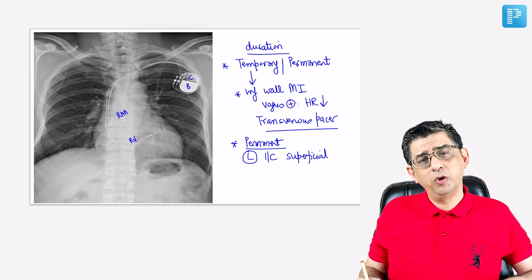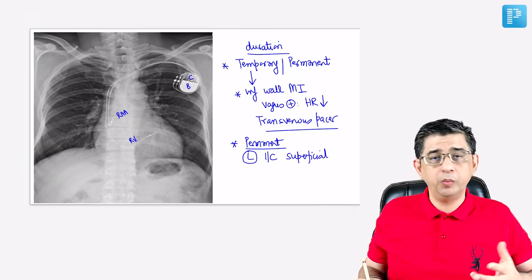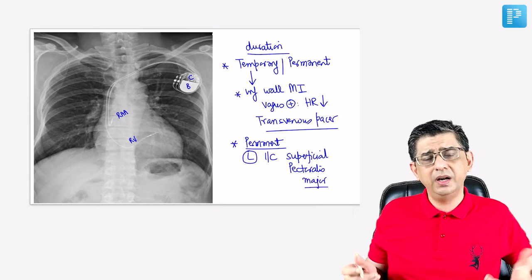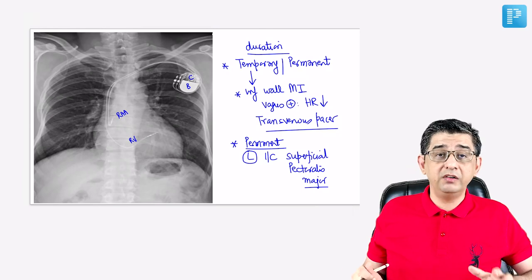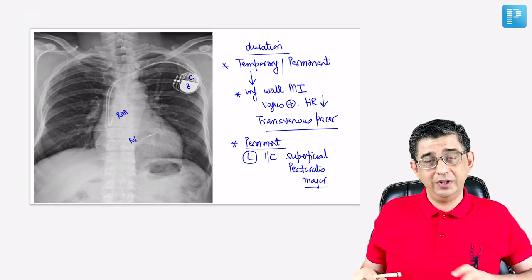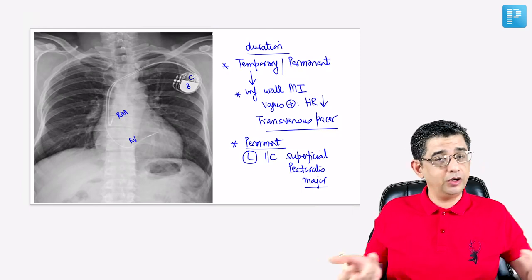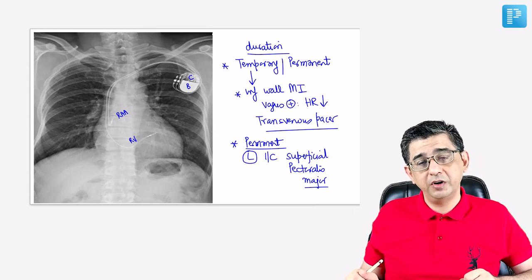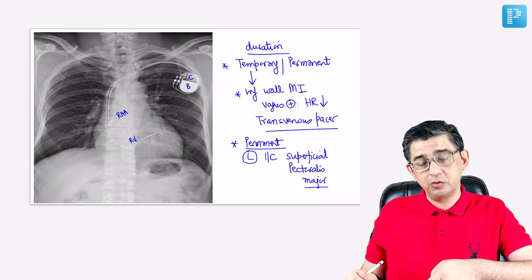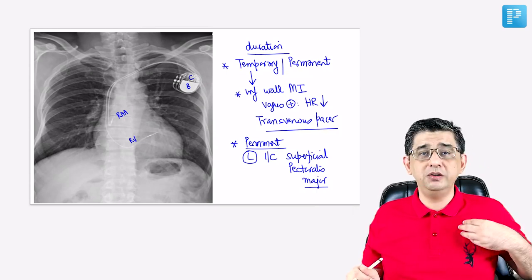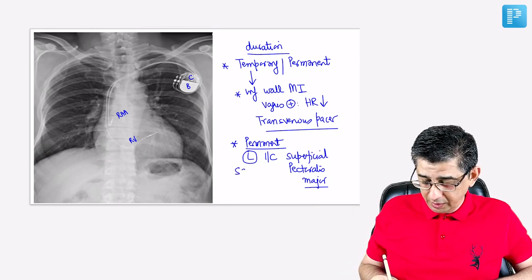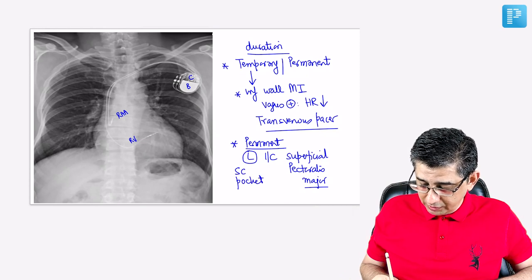Pacemaker deployment takes approximately one hour under fluoroscopic guidance. The patient will not have significant discomfort — we sedate them and monitor for a while. Wireless pacemakers are also now available, deployed directly in the right ventricle — much smaller than traditional pacemakers. This is a major miniaturization. The device is present in a subcutaneous pocket just below the skin.